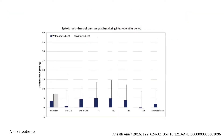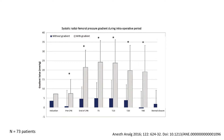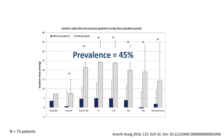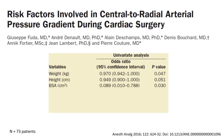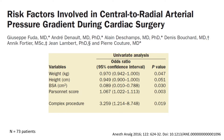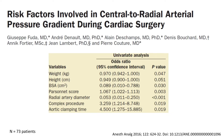A significant radial-to-femoral arterial pressure gradient appeared initially just before bypass, at the end of bypass, and at 5, 10, 20, 40 minutes, and upon sternal closure. The prevalence of this gradient was 45%. On univariate analysis, small weight, height, and body surface area were associated with the gradient. Higher risk score, more complex procedures, smaller radial artery, and longer aortic clamping time were also associated with a significant radial-to-femoral arterial pressure gradient.